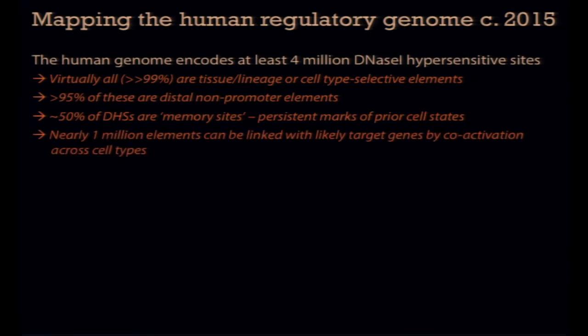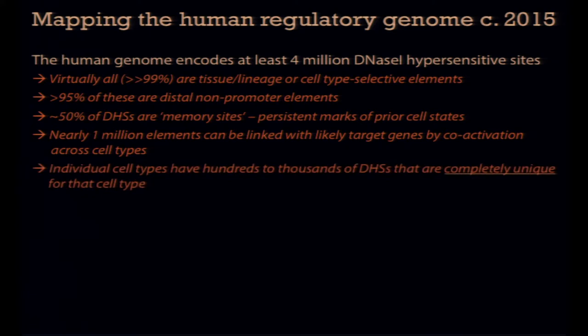There are also ways to connect about a million of these four million elements with likely target genes, by watching their co-activation with a target gene's promoter over hundreds of cell types. It's worth emphasizing that individual cell types have hundreds to thousands of elements that appear to be completely unique for that cell type. As we complete the map, that number may shrink a little, but it's not going to get below hundreds — certainly potentially even low thousands for individual cell types.